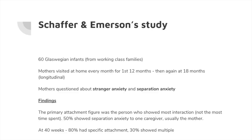They were looking at different situations — what happened when the mother left, when the child was left outside in their pram — and looking for stranger anxiety and separation anxiety, which also comes up later in the strange situation. What did they find? The primary attachment figure was the person who interacted with the child — not the one who spent the most time with it, not the one that fed it. That links back to another part of the topic: Dollard and Miller. 50% of the infants showed separation anxiety to one caregiver, usually the mother.